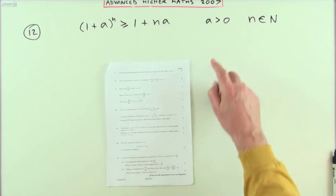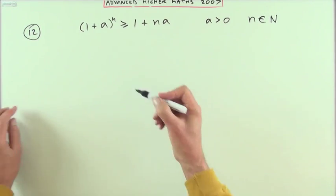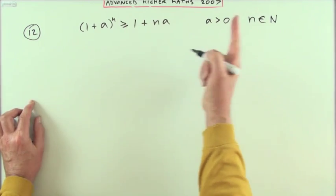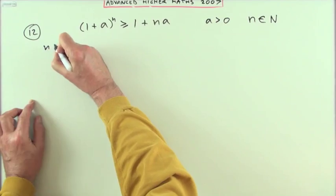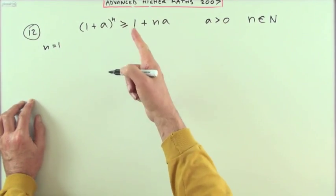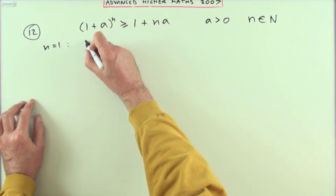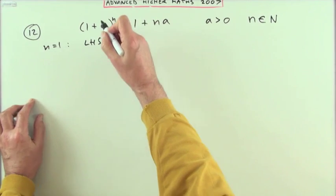Well, the first step would be check that it's true for the very first of these, the first positive integer, the first natural number. Check it for n equals 1. Is this greater than or equal to in that case? I'll take the left hand side and right hand side.